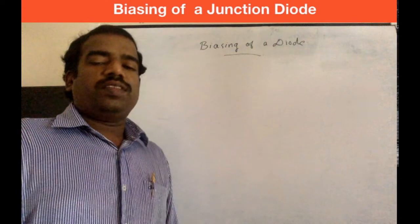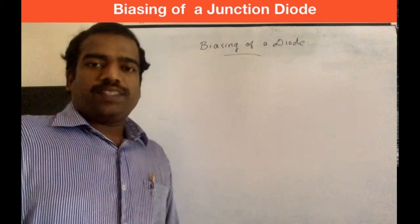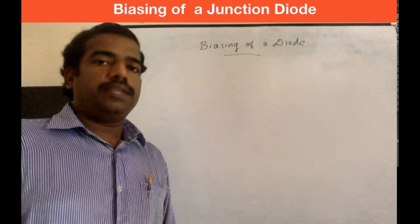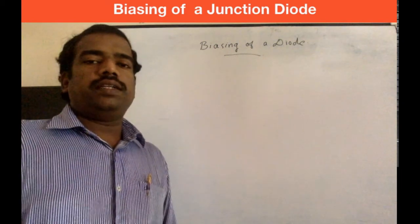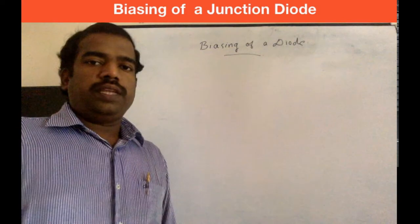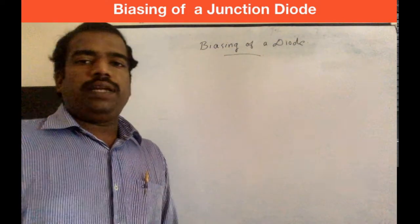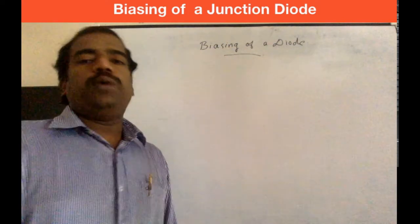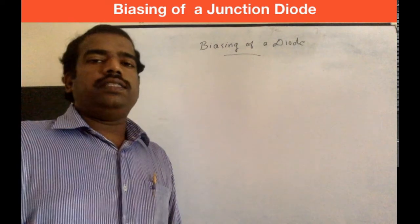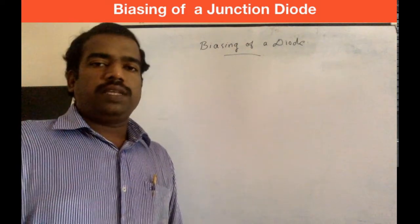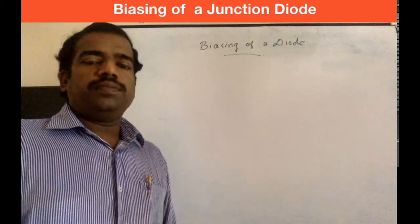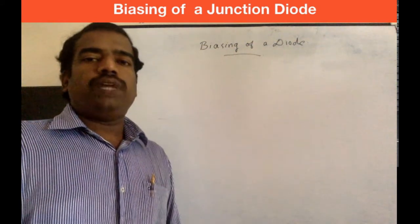Welcome. In our previous sessions we have learned different types of semiconductor materials like intrinsic semiconductor and extrinsic semiconductor. We also discussed the junction properties of a diode, the p-type and n-type semiconductor junction, the depletion region, and the potential barrier. In this session, we will learn about biasing of a junction diode.